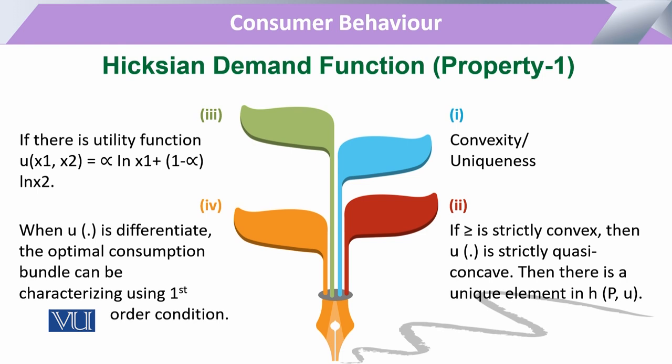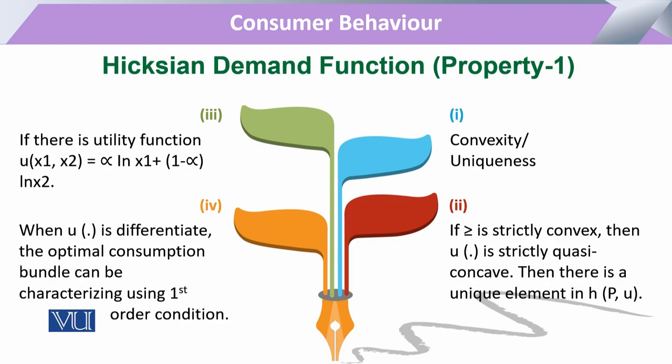The first-order condition gives a particular property: the output obtained is the same whether dealing with one commodity or two commodities. The properties of the Hicksian demand function are very necessary to be fulfilled; otherwise, the Hicksian demand function cannot execute all the functions expressed through its derivations and related problems.